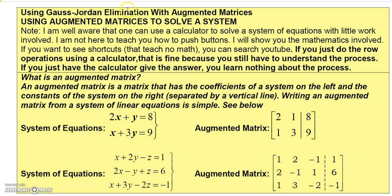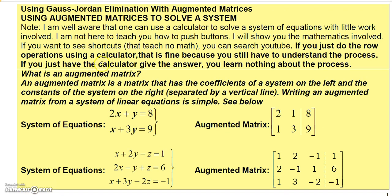To solve a system of equations using augmented matrices, the first thing you need to know is how to write a system as an augmented matrix. An augmented matrix is where you take two matrices and augment them together. Looking at this system, the left side gives a matrix of just the coefficients: 2 for x and 1 for y in the first equation, and 1 for x and 3 for y in the second — so you write that as the matrix 2, 1, 1, 3.